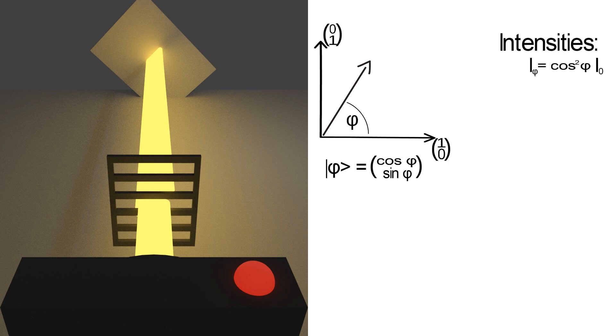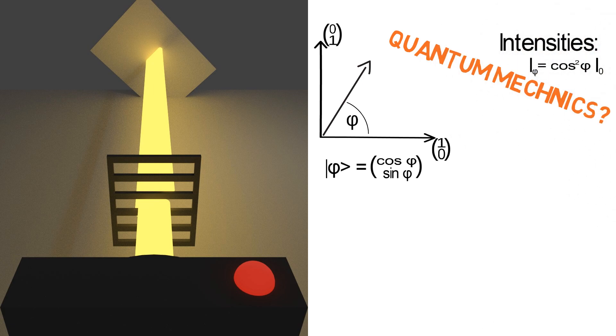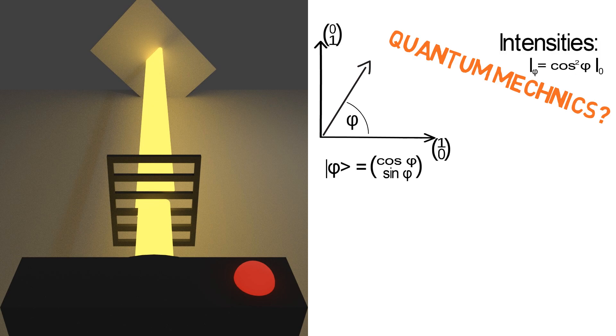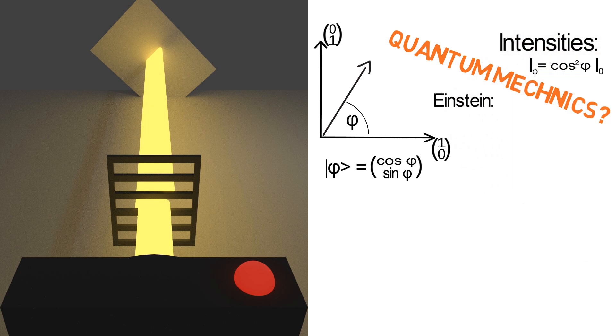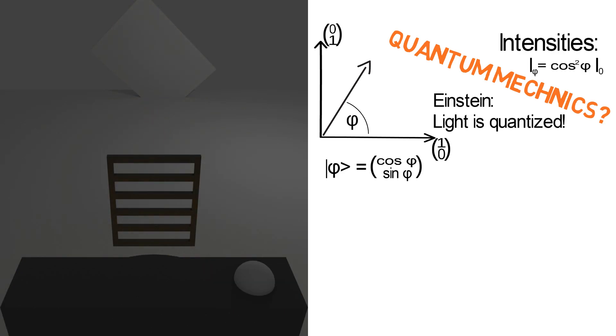What does all this have to do with quantum mechanics? Well Einstein received his Nobel Prize for realizing that the light beam is actually quantized, which means that it consists of millions of light quanta called photons. And because we only have light of one frequency, all these photons carry the same energy, E equals h nu.